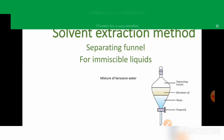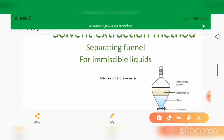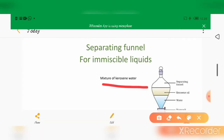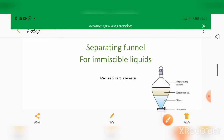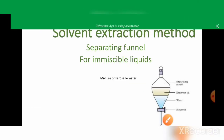In the solvent extraction method, two immiscible liquids can be separated — this is the principle of this method. For example, the mixture of kerosene and water: these two do not miscible with each other.